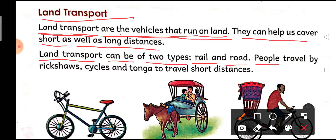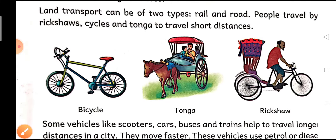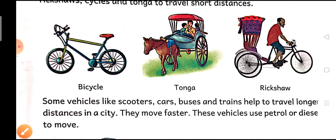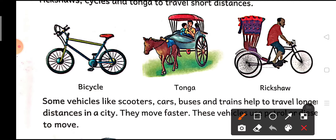People travel by rickshas, cycles, and tonga to travel short distance. अगर लोगों को short distance, यानि कि थोड़ी दूरी तय करनी है, तो वो ricksha, cycles, and tonga का use करते हैं। Now you can see the pictures of bicycle, tonga, and ricksha.